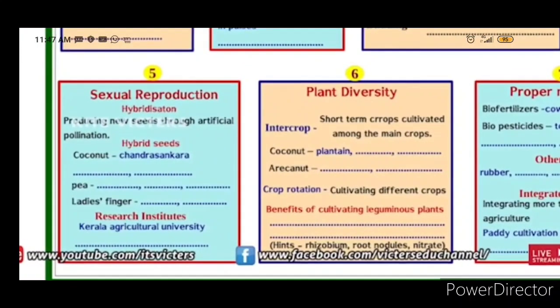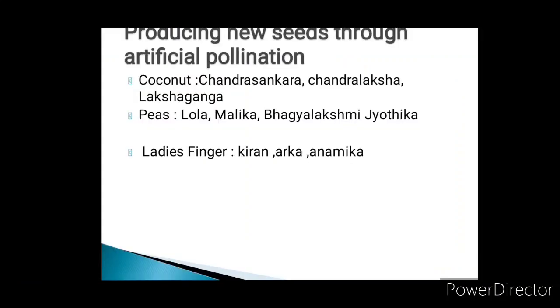Sexual reproduction — hybridization — is the process of producing new seeds through artificial pollination. Hybridization develops hybrid seeds. Examples of hybrid seeds include Chandra, Shankara, and Lekshaganga.